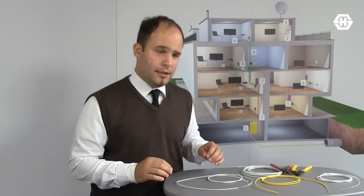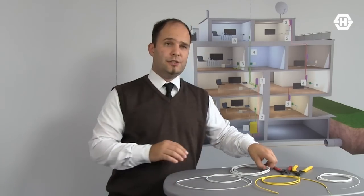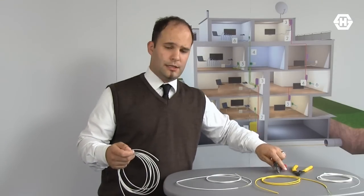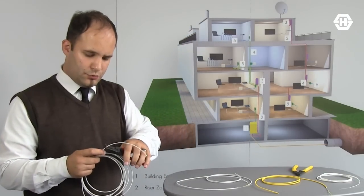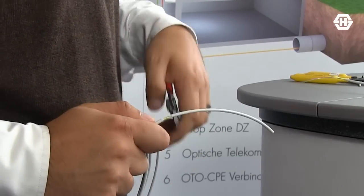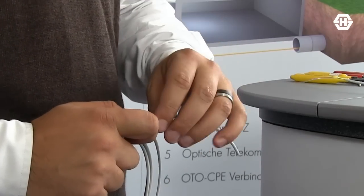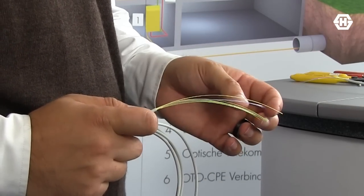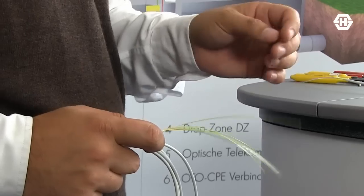Besides that, we have added an easy stripping performance to the cable. So you easily strip the outer jacket with an appropriate tool and there you find the aramid yarns protecting the fibers.